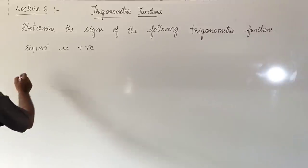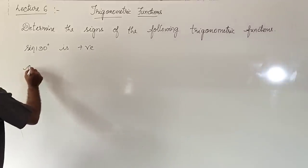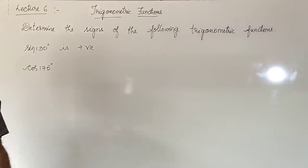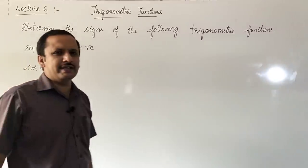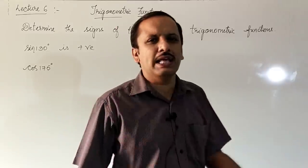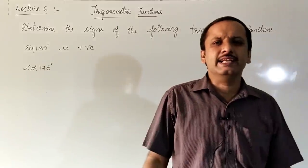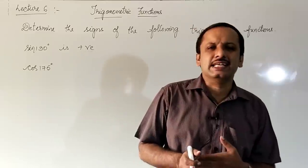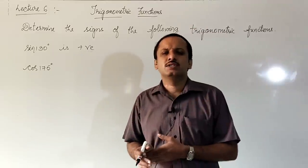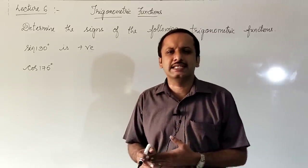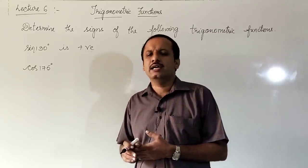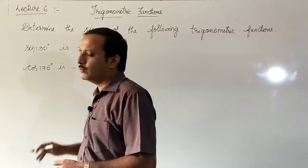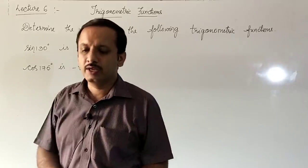Next question: cos 175 degrees. 175 degrees also lies in the second quadrant - it is greater than 90 degrees but less than 180 degrees. In the second quadrant cos is negative. Hence cos 175 degrees is negative.